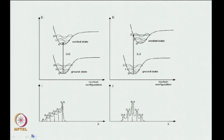Here is another example for the same Franck-Condon overlap. Looking at the one on the left versus the right: on the left, there is almost no change in nuclear configuration — R-equilibrium is the same — and hence the 0-to-0 transition is the most intense. Going to the right, where R-equilibrium has changed, the 0-to-0 is no longer the maximum, but the 0-to-2 has become the maximum.